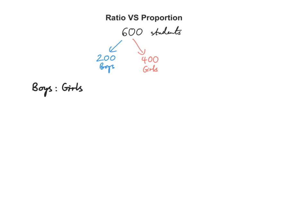The ratio of boys to girls is just 200 to 400. All ratios can be simplified by dividing by the largest common factor. Clearly, the largest common factor here is just 200, so I can divide both of them by 200, and this simplifies to 1 to 2.